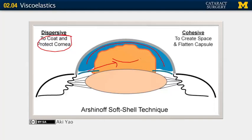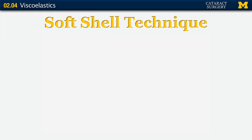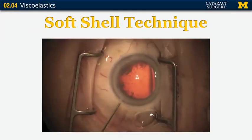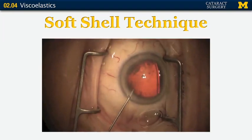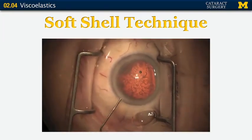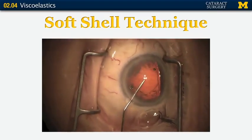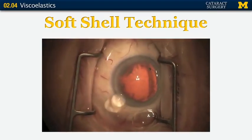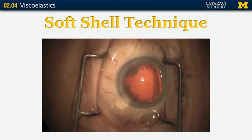The main object of the cohesive is to flatten the capsule and make a space for you to work with all your instruments inside the eye. I use Viscoat and Amvisc to accomplish that. Let's watch a little video of me doing the soft shell technique: here goes my dispersive agent, my Viscoat, and here comes my cohesive agent, pressing all of my dispersive agent up next to the endothelium and making a nice space for me to maneuver.